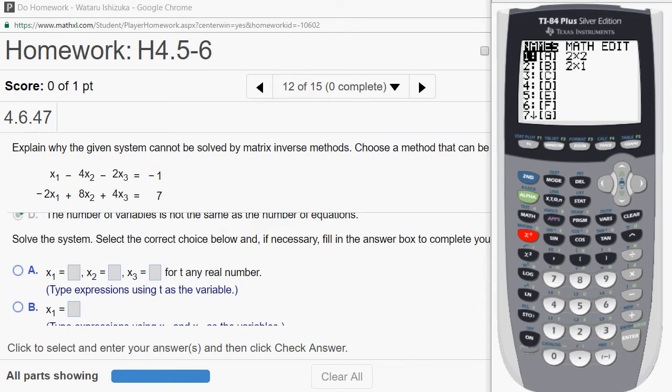Go to matrix, and I'm going to edit matrix A. Then I need two rows and four columns. So this is going to be two, enter, four, enter.